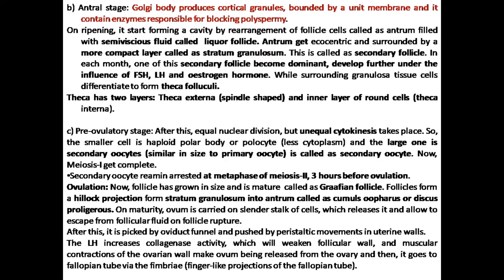Today we will discuss the pre-ovulatory stage. After the formation of tertiary follicle, it goes into the next stage called the pre-ovulatory stage. In this stage, equal nuclear division will take place, but the cytokinesis will be unequal. The chromatin material or chromosome material will be transferred equally into the two daughter cells, but the division of cytoplasm will be unequal. One large cell will be formed, called the secondary oocyte, and a smaller daughter cell, called the polar body or polar bodies. Meiosis 1 is now complete.